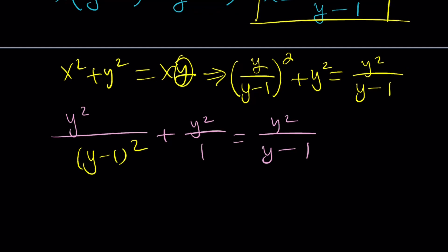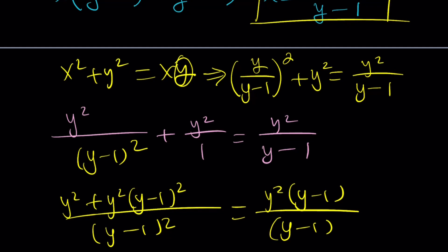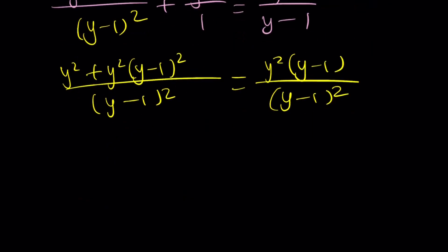So the common denominator is just going to be y minus 1 squared. Let's multiply the y squared by y minus 1 squared over y minus 1 squared. Let's multiply this by y minus 1 and we're going to get the same numerators. Forget about the denominators, cross them out. Hopefully y does not equal 1. From here, you get the following: y squared plus y squared times y squared minus 2y plus 1 equals y cubed minus y squared.